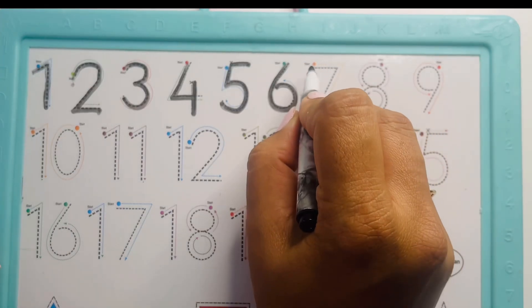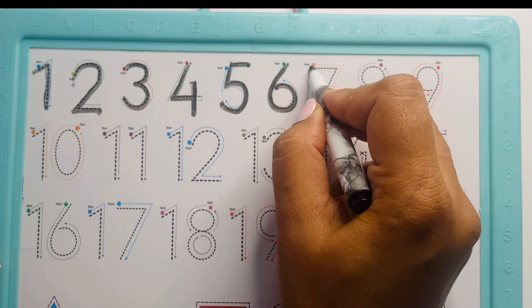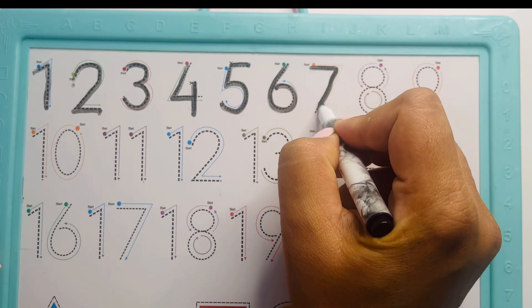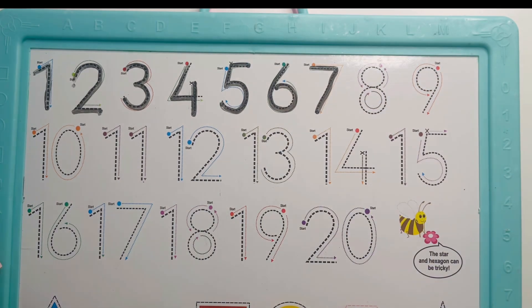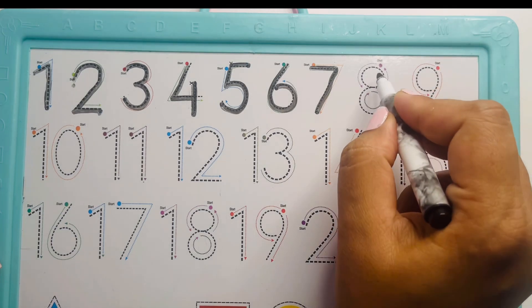Now for seven, you need to start from here. Number seven. Connect all the dots. It's easy. So for eight, you need to connect two circles.